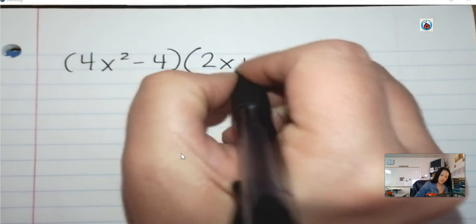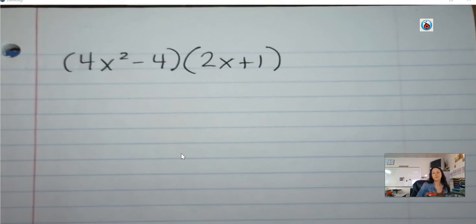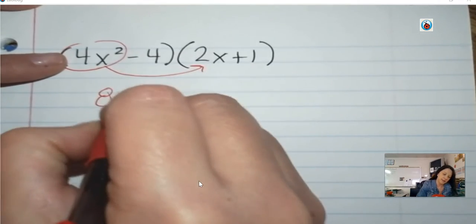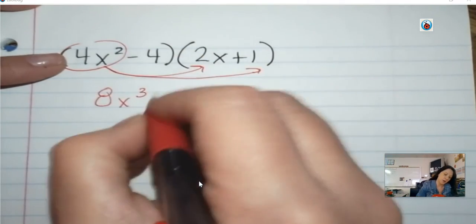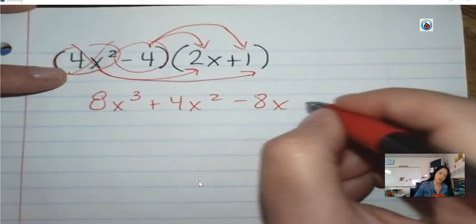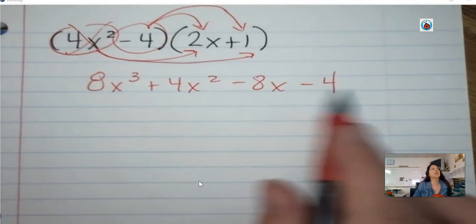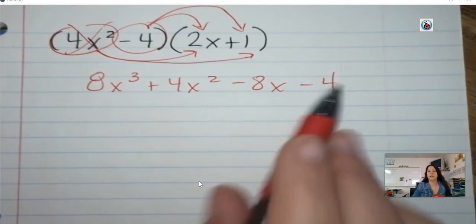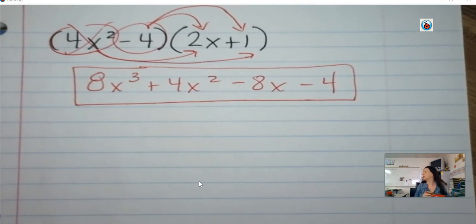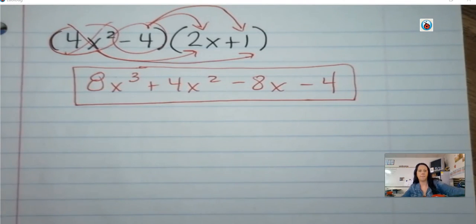This one is not on your paper: 4x squared minus 4 times 2x plus 1 — go ahead and multiply that. 4x squared times 2x: 4 times 2 is 8, x squared times x is x cubed, so 8x cubed. Then 4x squared times 1 is 4x squared. Then negative 4 times 2x is negative 8x. And finally negative 4 times 1 is negative 4. Those can't be combined — x cubed and x squared don't go together, they don't go with an x, and they don't go with a constant. So there's no combining like terms here. Tomorrow we'll finish by doing word problems, and then you'll have your exit ticket.